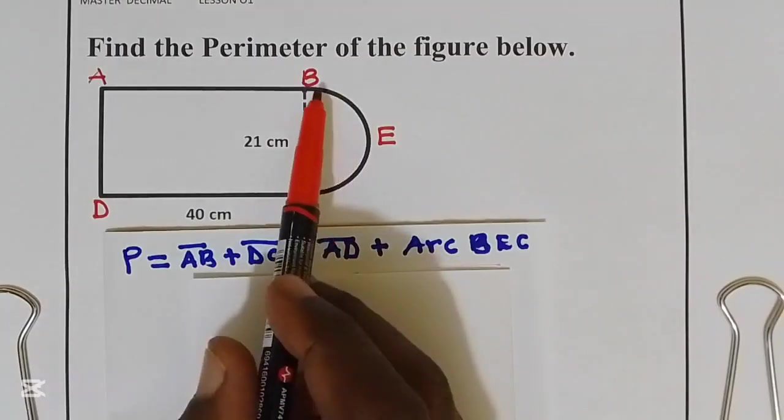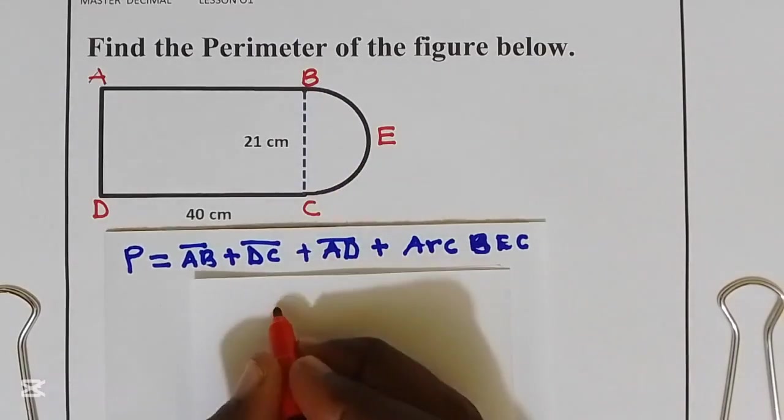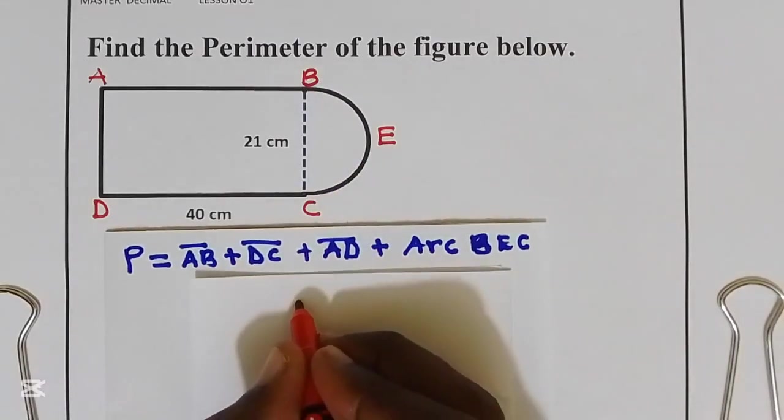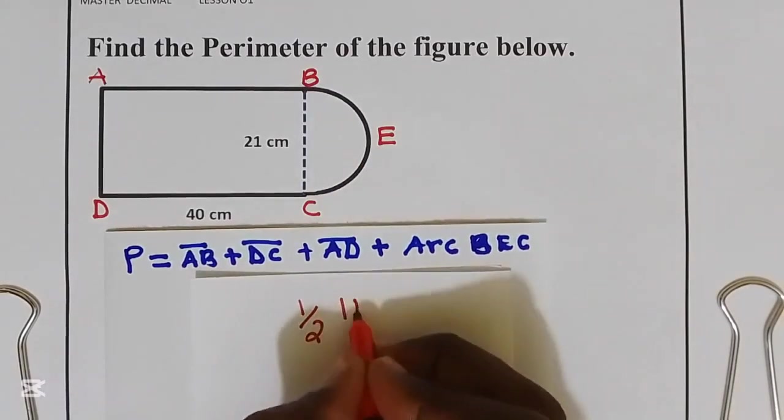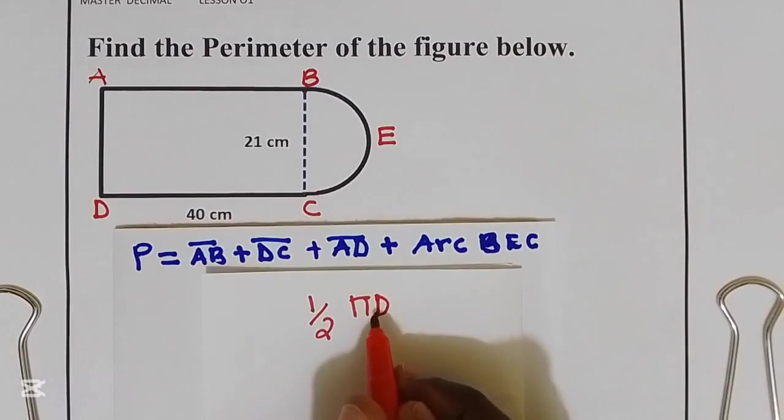But arc BEC is a semicircle that is given by half pi D. This is half the circumference of a circle.